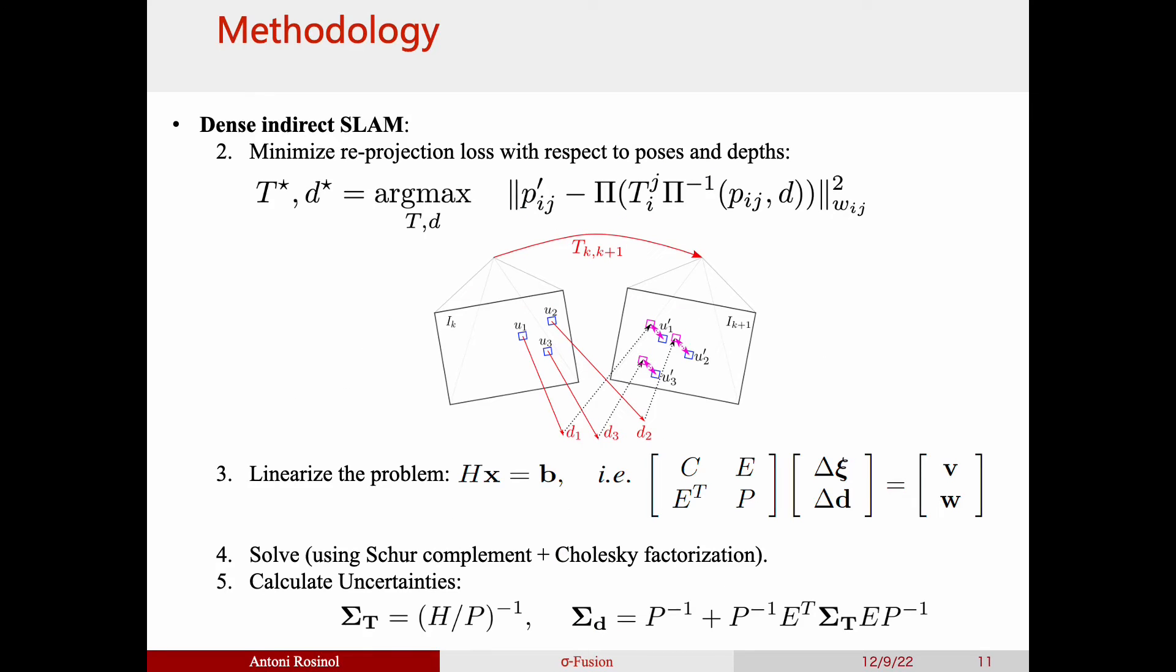To do so, we linearize the reprojection loss with respect to camera poses and depths, resulting in the familiar linear least squares problem, which we solve by taking the Schur complement followed by Cholesky factorization.